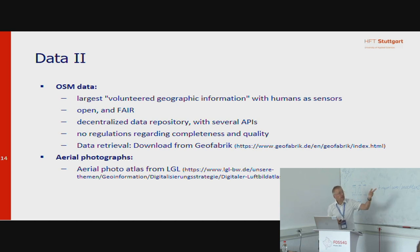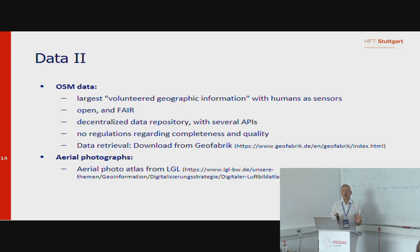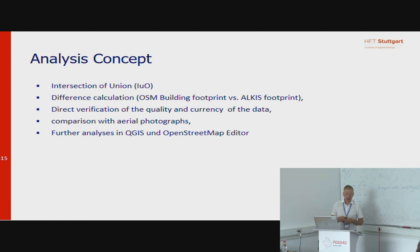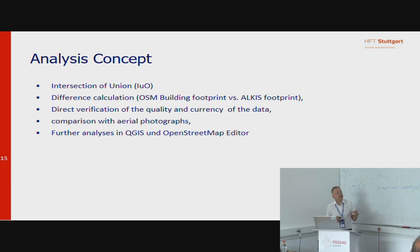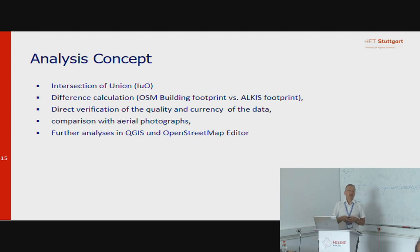In our study, we did data retrieval from Geofabrik, a company in my hometown which offers several kinds of datasets very close to open source and open data. In addition, we used aerial photographs derived from the LGL for comparison purposes. Regarding the analysis, we used something like intersection over union, which I will explain in the next slide. We did some difference calculations, looking at the overlap between OSM buildings and ALKIS footprints, and then we did a verification of quality and currency of the data, compared it with aerial photographs, and did further analysis in QGIS and in the OpenStreetMap editor.